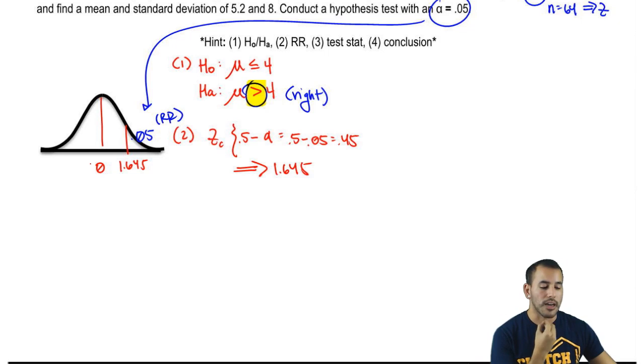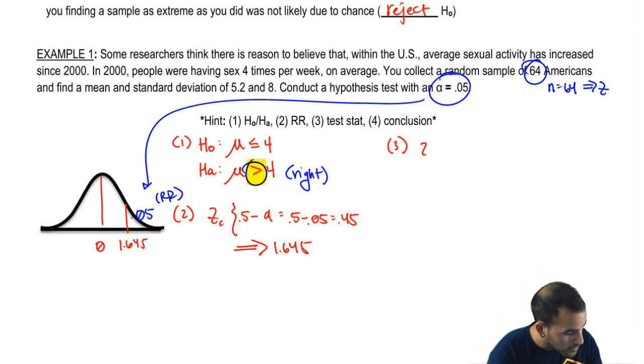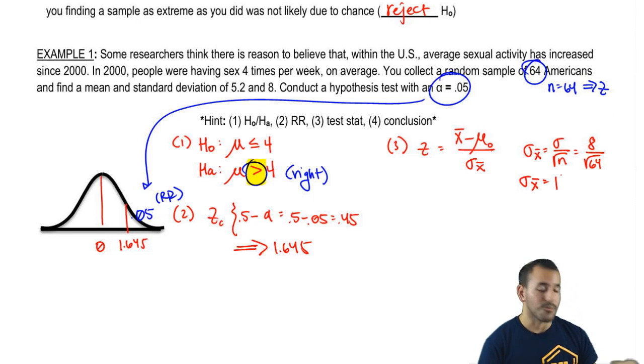And now here's our zero point. The middle is always going to be zero. Now our next step is to get the test statistic. So Z is x̄ minus the mean divided by the standard error. We don't have the standard error yet, so let's go ahead and get that. Standard deviation over square root n. So standard deviation was 8 divided by the square root of 64, so our standard error is 1.